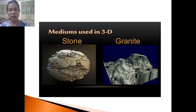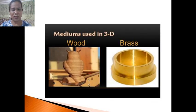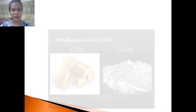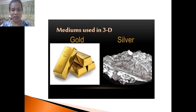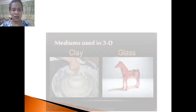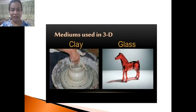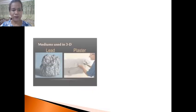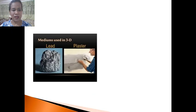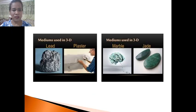Mediums used in 3D include stone and granite, which are more expensive, as well as wood, grass, gold, silver, clay, glass, lead, plaster, marble, and jade.